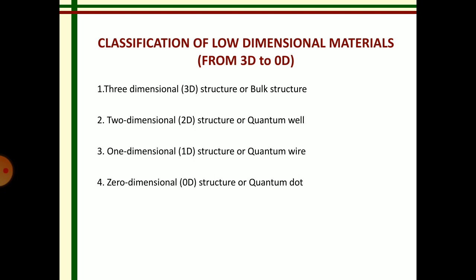One is three dimensional structure or bulk structure. Second, two dimensional structure or quantum well. Third, one dimensional structure or quantum wire. Fourth, zero dimensional structure or quantum dot. We will see one by one.